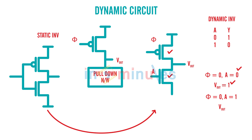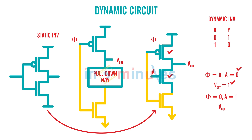In dynamic circuits, apart from the pulldown network and the PMOS transistor with input phi, we will also add an additional NMOS transistor at the bottom, with its input also called phi. This transistor is called a footer transistor. The general schematic diagram is updated accordingly, and what it does will be explained on the next slide.